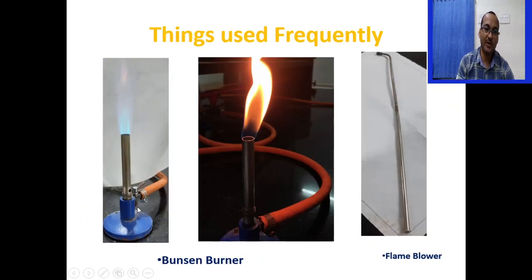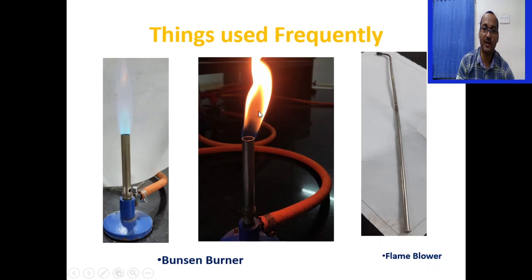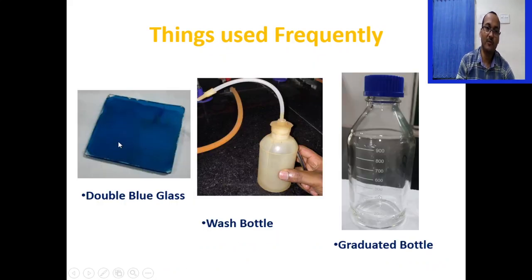The Bunsen burner has three parts: metal base, a regulator called the collar, and a burner tube. When you put the gas on and light it with a lighter or matchbox, you get a flame with an inner zone and an outer zone. The blue-colored zone is known as the luminous flame where most of the carbon monoxide is found. The flame blower is used to blow the flame into the charcoal cavity where the salt or compound is placed. The double blue glass is used during the flame test to see different colors.